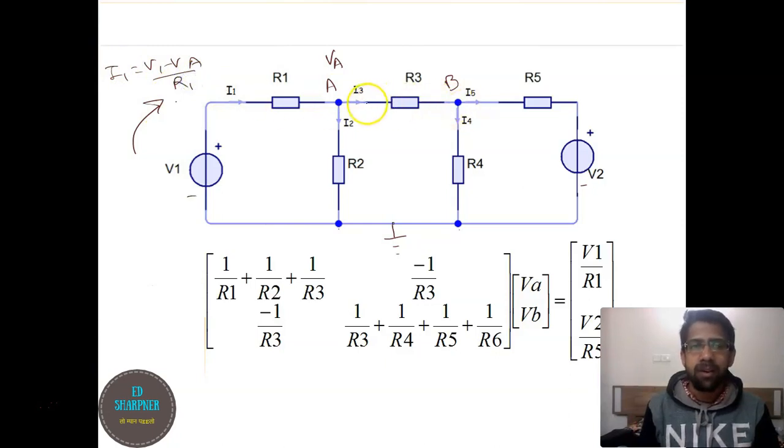Similarly for I3, we will write VA minus VB divided by R3. This is how every current will be represented in terms of voltage and resistance.